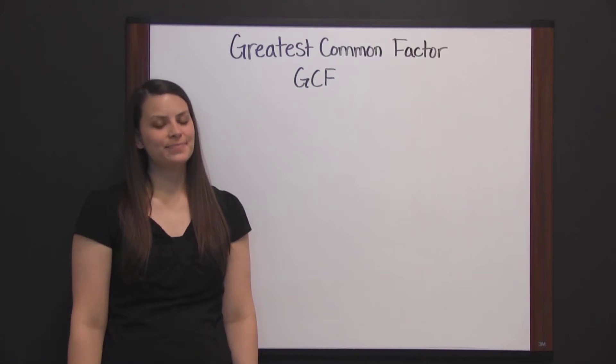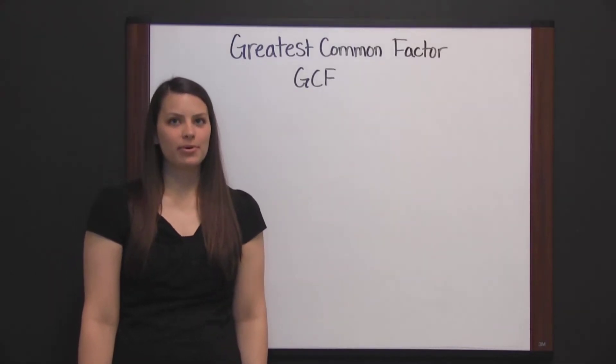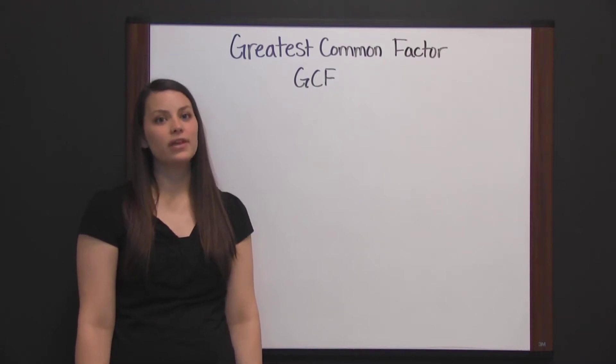Greatest common factor. The greatest common factor, or GCF, of two numbers is the largest value that divides into each of the numbers.